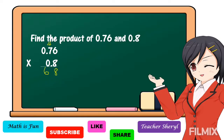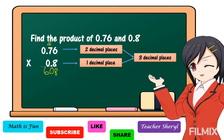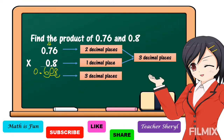Then we're going to count the decimal places in our factors. For our multiplicand, we have two decimal places. For our multiplier, we have one decimal place. Therefore, we have three decimal places in our factors. We count from right to left: one, two, three — then we put the decimal point and zero for the whole number place. Therefore, our answer has three decimal places, giving us 0.608.